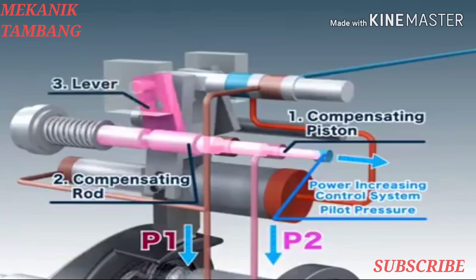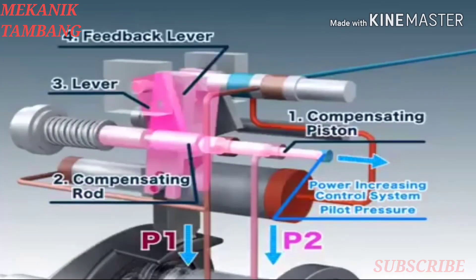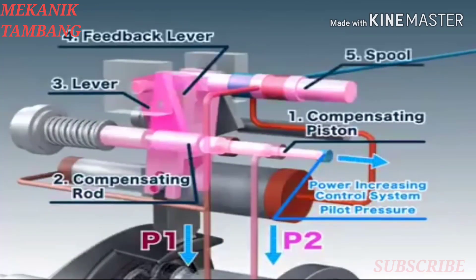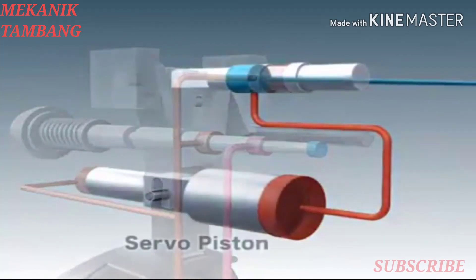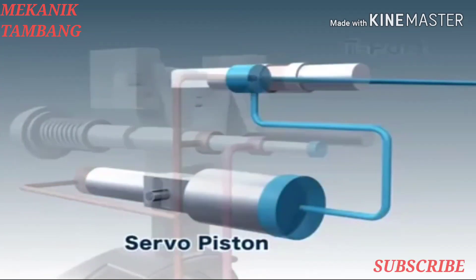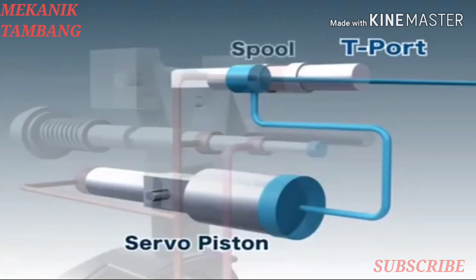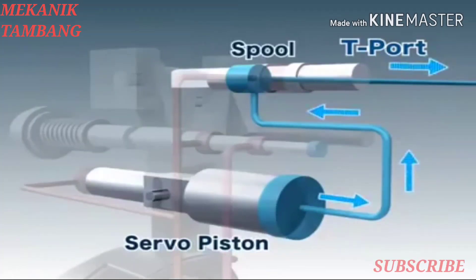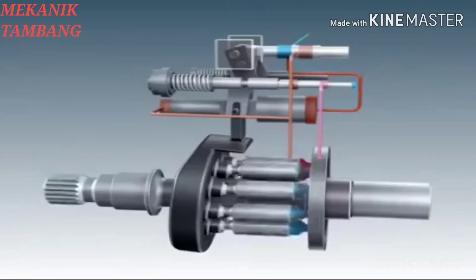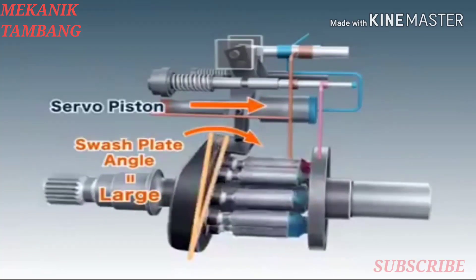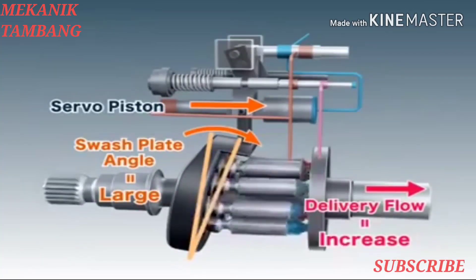As the compensating rod moves, the lever rotates, moving the feedback lever, which in turn moves the spool. As a result, the pressure within the larger side of the servo piston is released through the tank port, which then moves the servo piston. As the servo piston moves, the inclination of the swash plate increases, increasing the delivery flow.